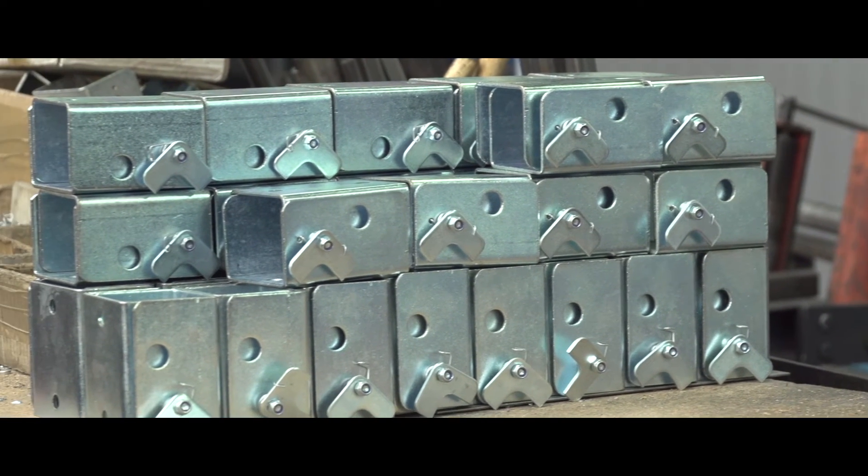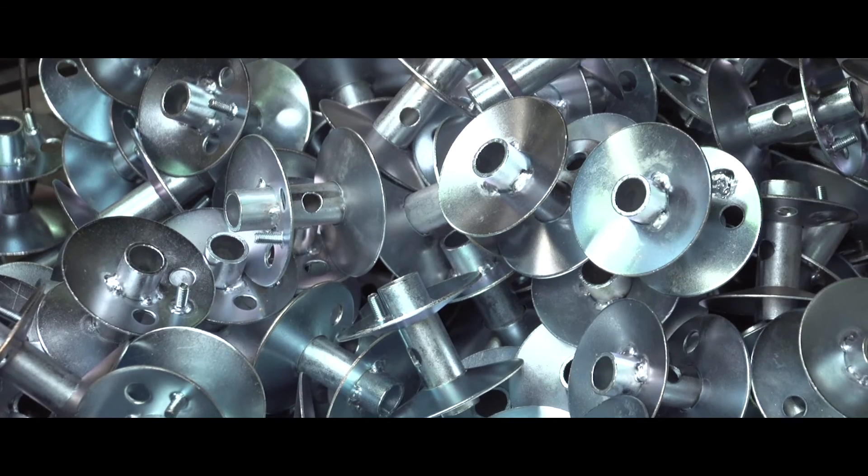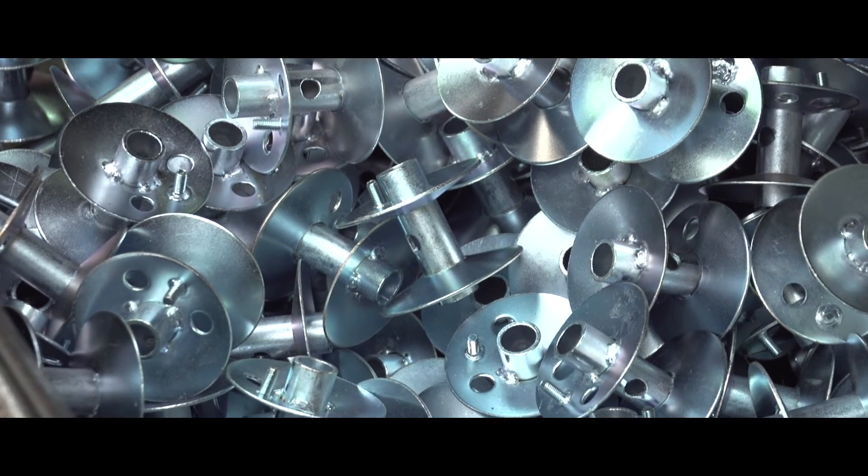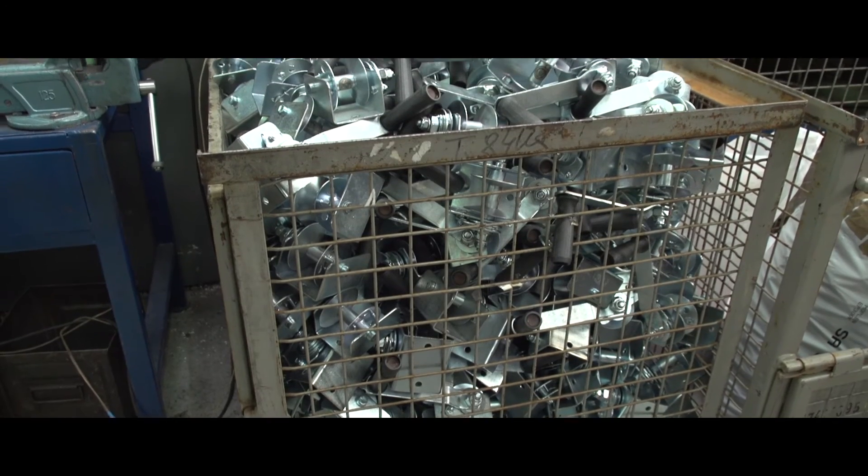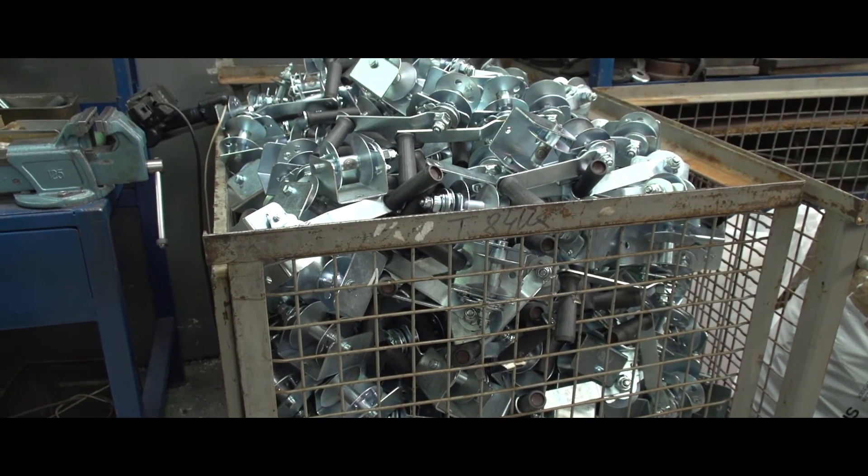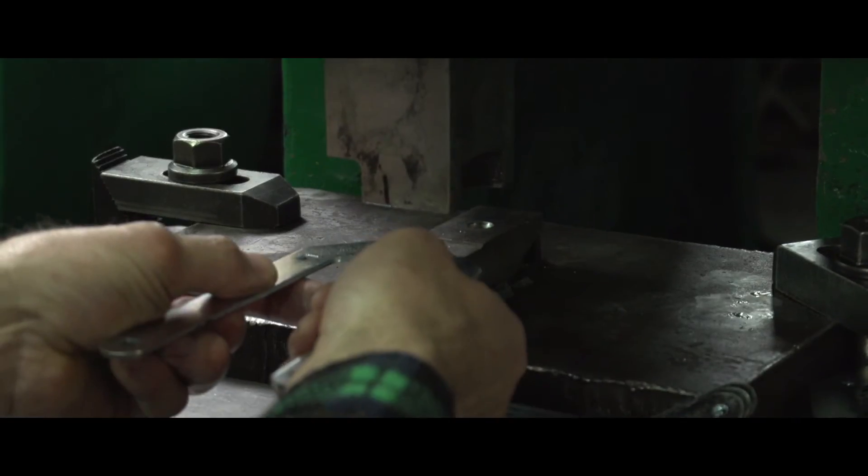Znajduje się tu także centrum pionowe, gdzie robione są wózki do ścian mobilnych. Patrząc na liczbę produkowanych elementów, można pomyśleć, że Oskoplast specjalizuje się w produkcji wyciągarek. W ciągu roku produkuje się ich tu wiele tysięcy. Oprócz tego powstają także niezliczone ilości elementów do drabin.